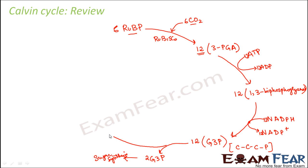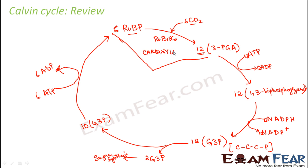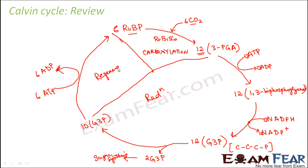The remaining 10 G3P molecules further utilize ATP, which gets converted to ADP, and the extra phosphate gets added to the single-phosphate compound to form a biphosphate compound — that is, ribulose biphosphate. Here it utilizes 6 molecules of ATP. So looking at the overall process: the first part is carboxylation, then the reduction process starts, and then comes regeneration. These three stages together complete the Calvin cycle.